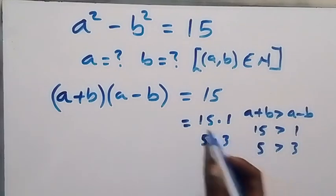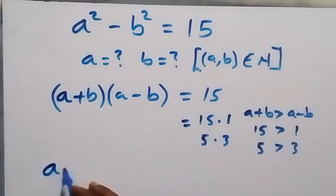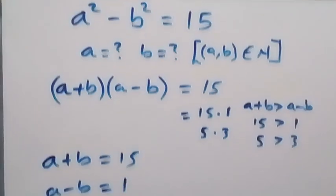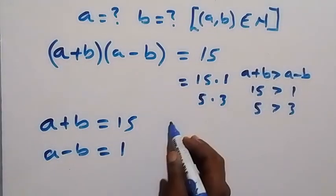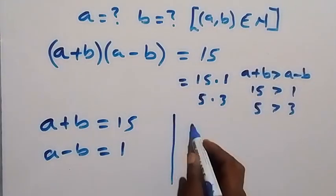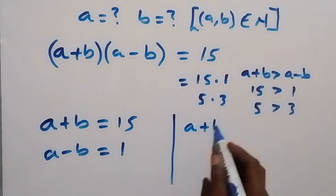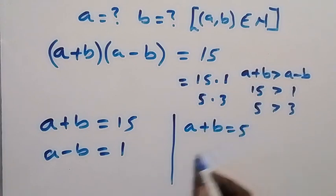For the first category: a+b = 15 and a-b = 1. For the second category: a+b = 5 and a-b = 3.